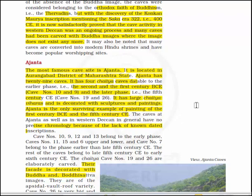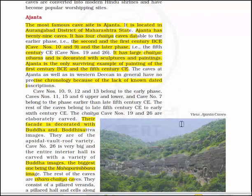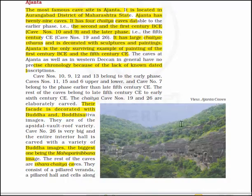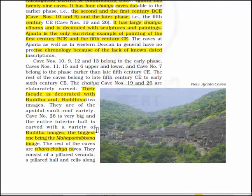The caves at Ajanta, as well as in the Western Deccan in general, have no precise chronology because of a lack of known dated inscriptions. Cave numbers 10, 9, 12 and 13 belong to the early phase. Caves number 11, 15, 6 (upper and lower) and 7 belong to a phase earlier than the late 5th century CE. The rest of the caves belong to the early 6th century CE. The Chaitya caves number 19 and 26 are elaborately carved; their facade is decorated with Buddha and Bodhisattva images of the apsidal vault-roof variety. Cave number 26 is very big and the entire interior hall is carved with a variety of Buddha images, the biggest being the Mahaparinibbana image.